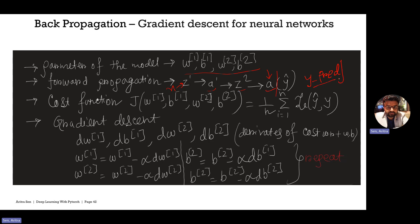Once we have Y-pred and the actual label Y from our training dataset, we can calculate the cost function with respect to the model parameters W1, B1, W2, and B2. We do this summation from i=1 to N over all N training examples, calculating the loss with respect to each training example — loss with respect to Y-hat and Y — measuring how the predictions deviate from the actual values, whether it's regression or classification.